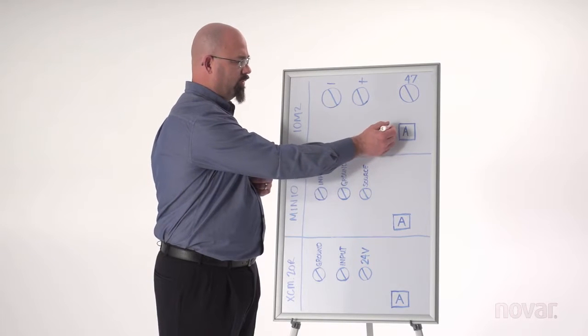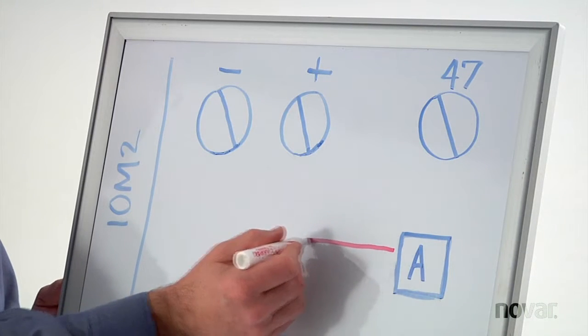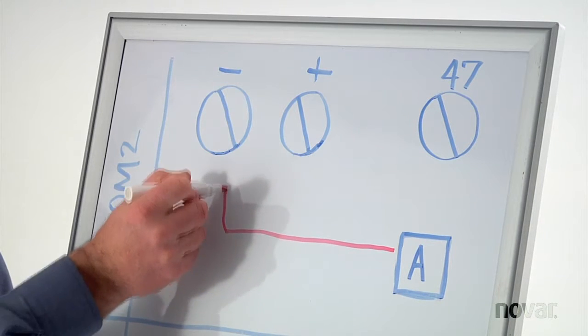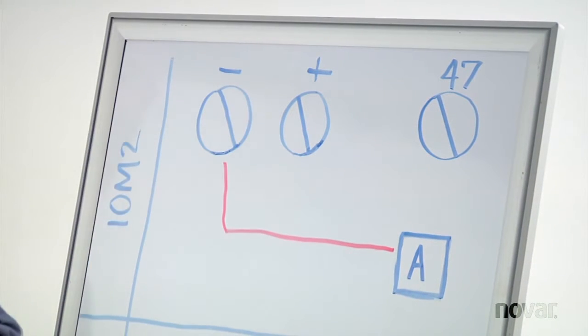We'll use the NOVAR white wire and go to the negative terminal on this IOM-2.